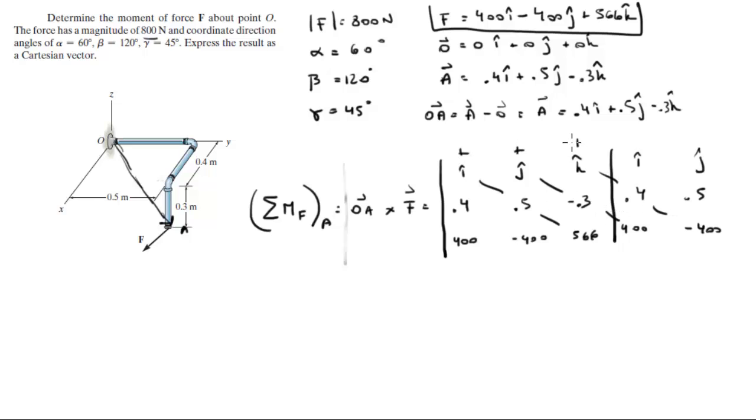Positive, positive, positive. i times 0.5 times 566 comes out to be 283i. j times negative 0.3 times 400 is minus 120j. k times 0.4 times negative 400 is negative 160 in the k.